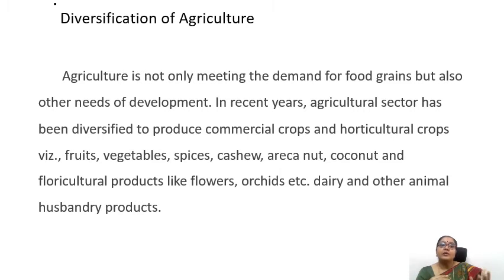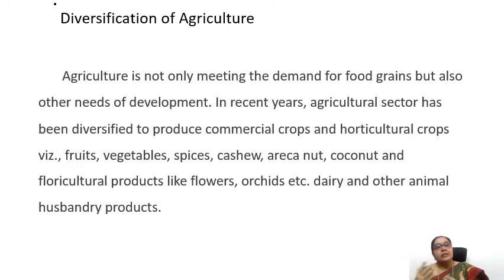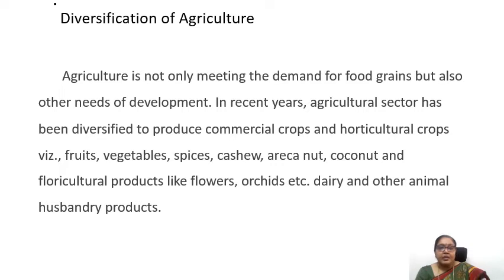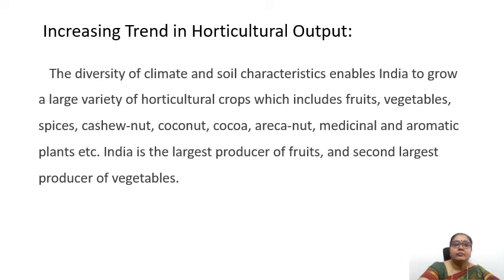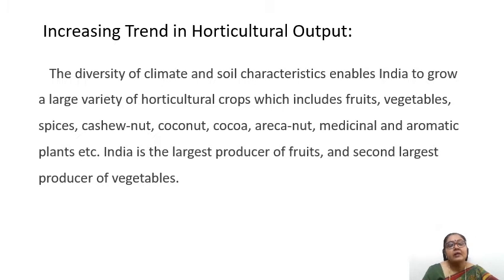The farmer who was only dependent on agriculture has now moved to commercial crops and other activities like animal husbandry, horticulture, or floriculture. This has been very advantageous to Indian farmers. We see increasing trends in horticultural output, as the diversity of climate and soil characteristics is enabling India to grow a large variety of horticultural crops.